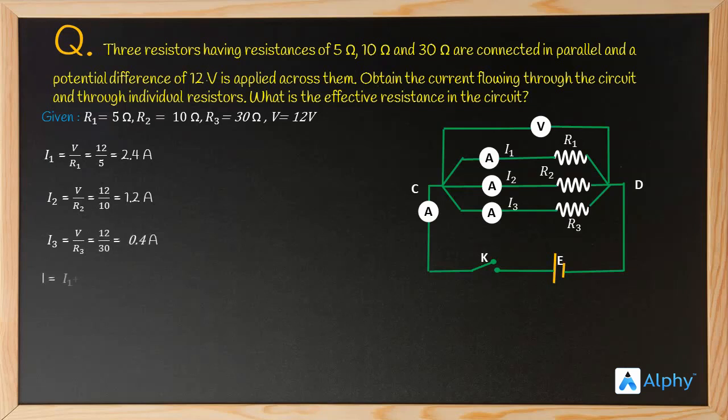These are the individual currents flowing across each resistor. The total effective current is the sum of all individual currents: I1 plus I2 plus I3, which equals 4 ampere.